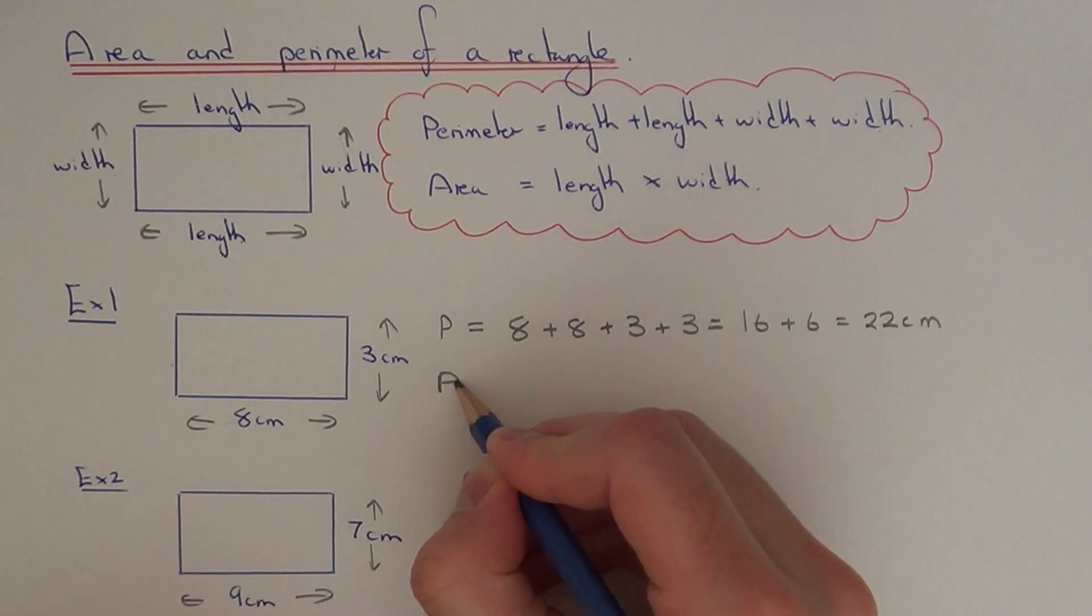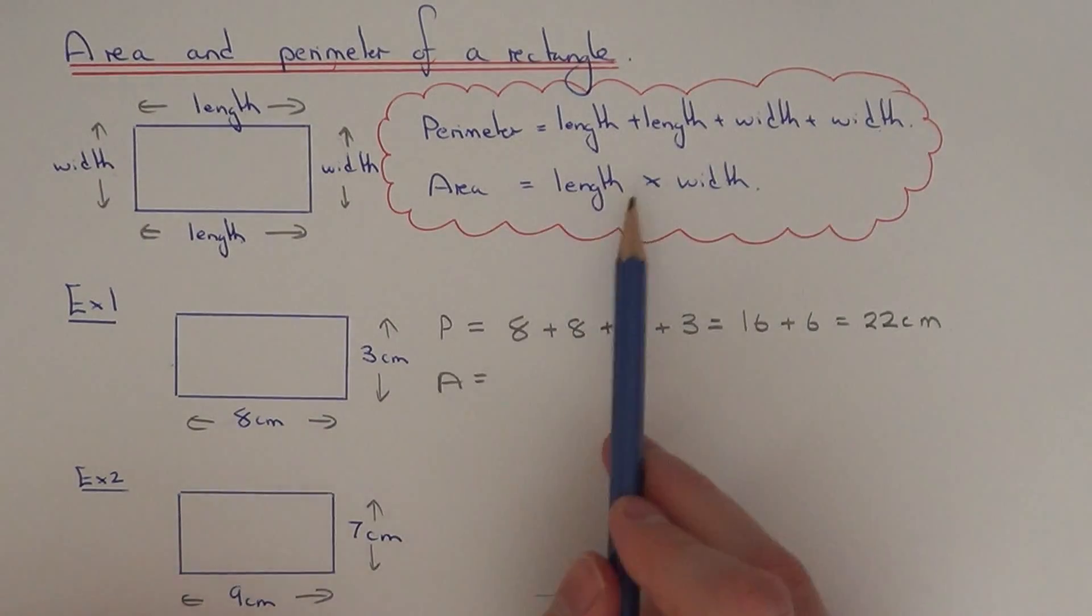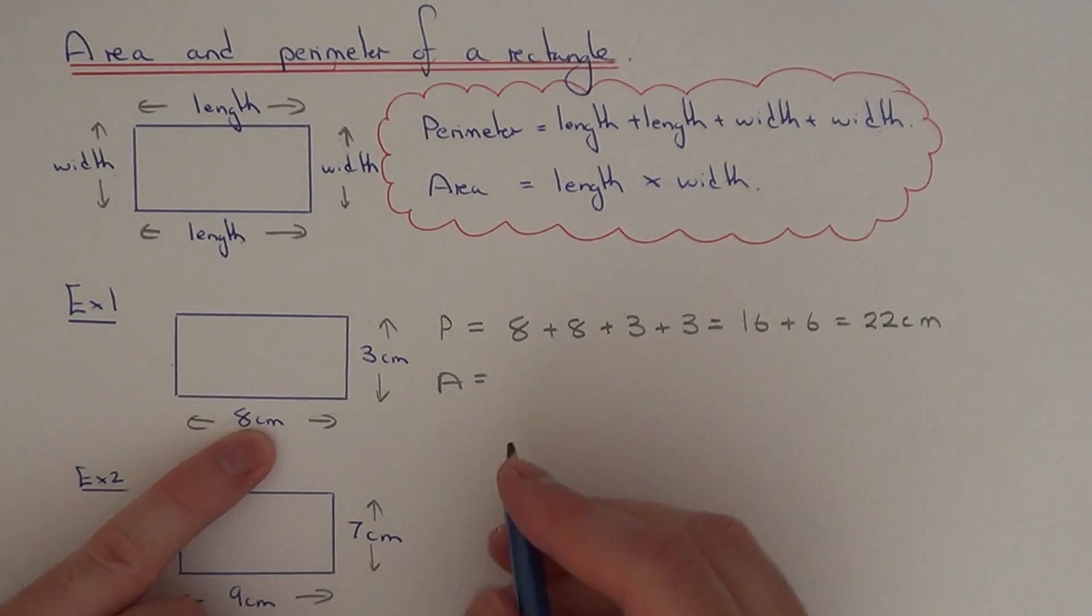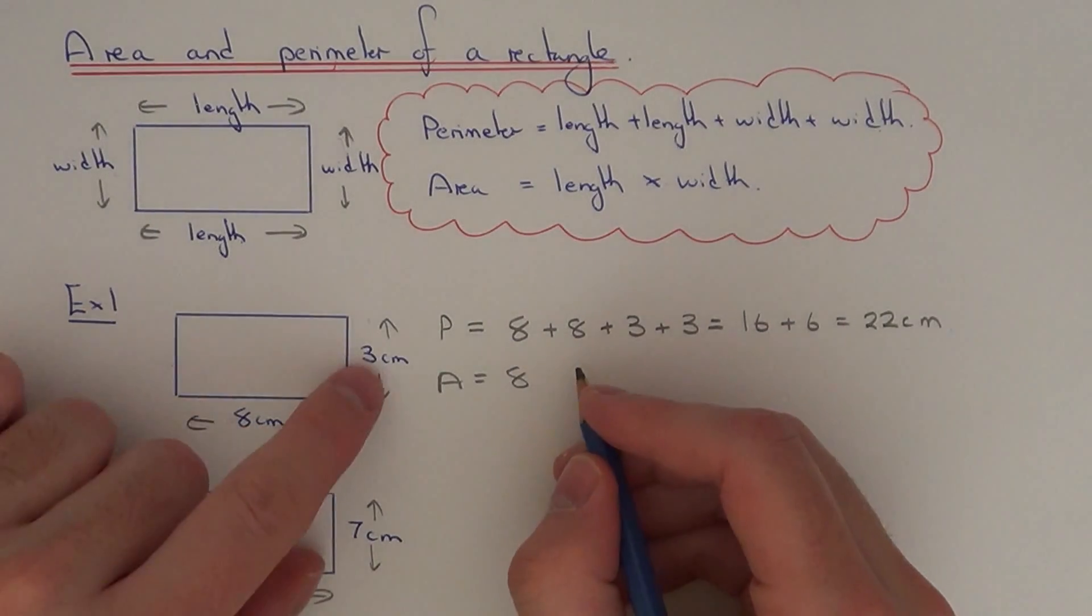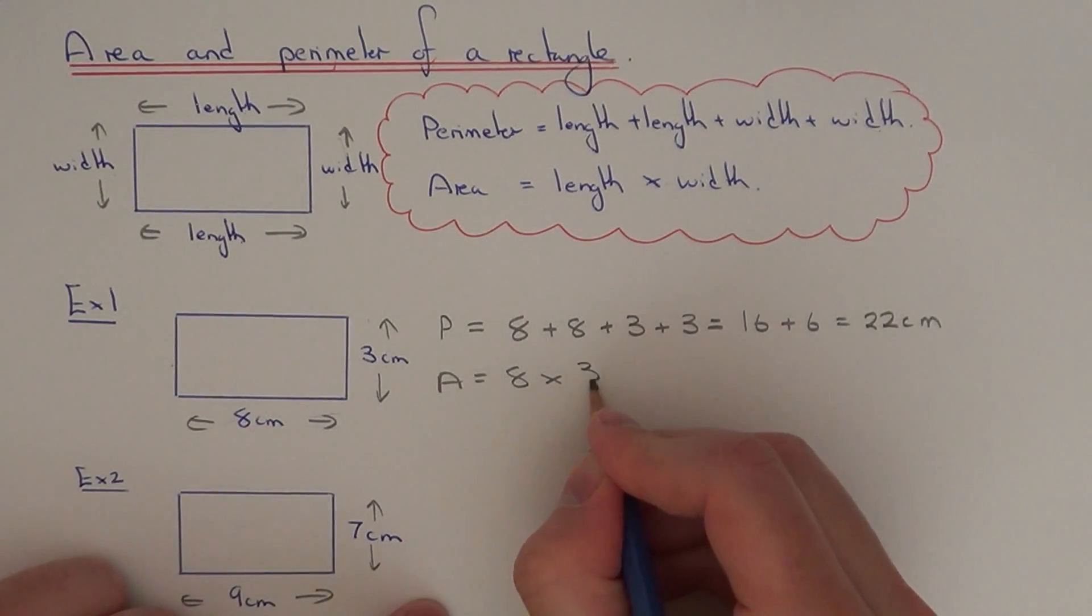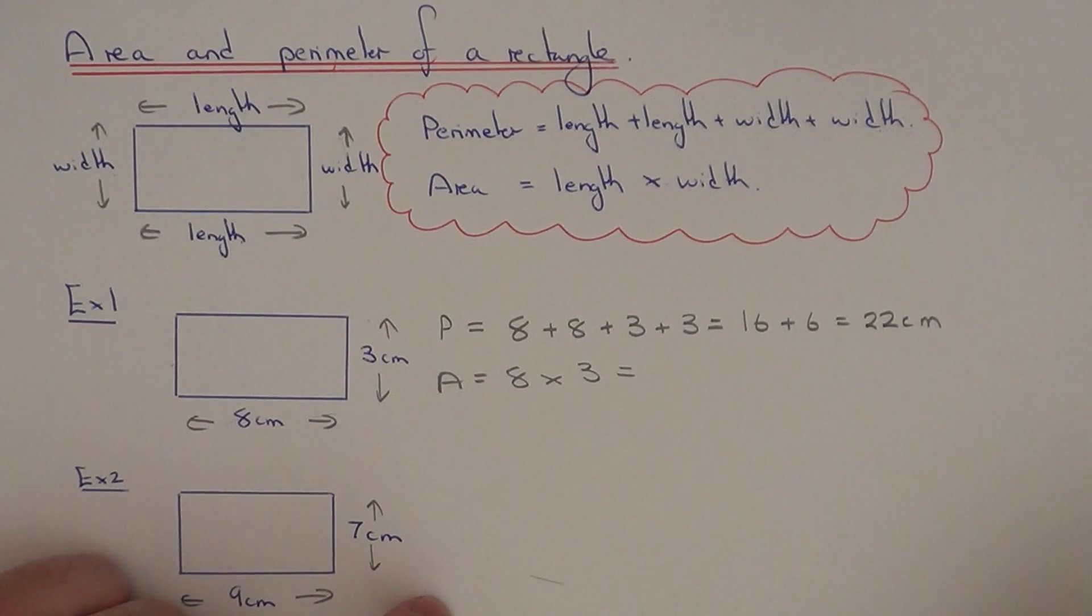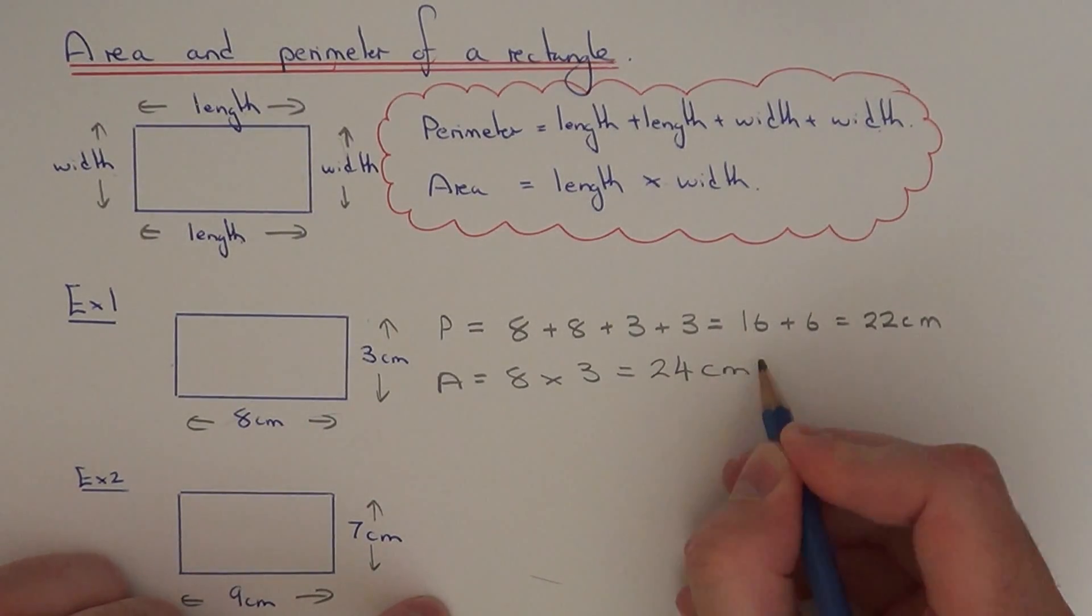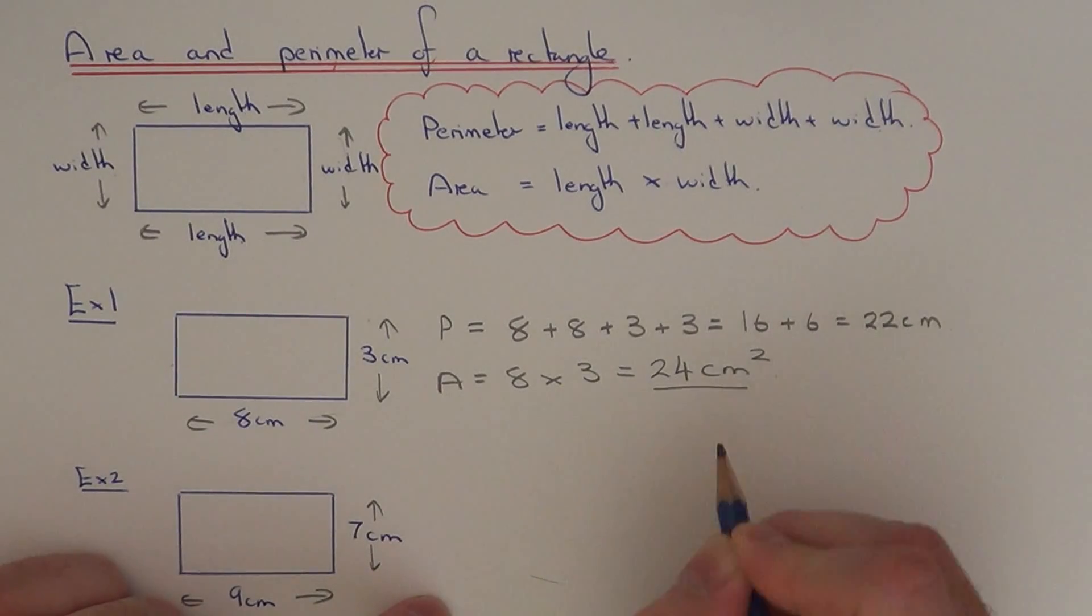So let's do the area next. With the area, you need to multiply the length by the width. So the length of the rectangle is eight and we multiply it by the width. So eight times three is twenty-four. Don't forget to put centimetres squared this time as we're doing an area.